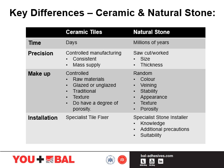Key differences between ceramic and natural stone. Ceramic, for example, will take days to manufacture. It's a very controlled manufacturing process which provides a consistent mass-supplied product. We have a mixture of raw materials and glazes, and they can be traditional or textured. They do have a degree of porosity, but porcelain tile has a lot less porosity than ceramic tile. These are normally installed by a ceramic tile fixer.